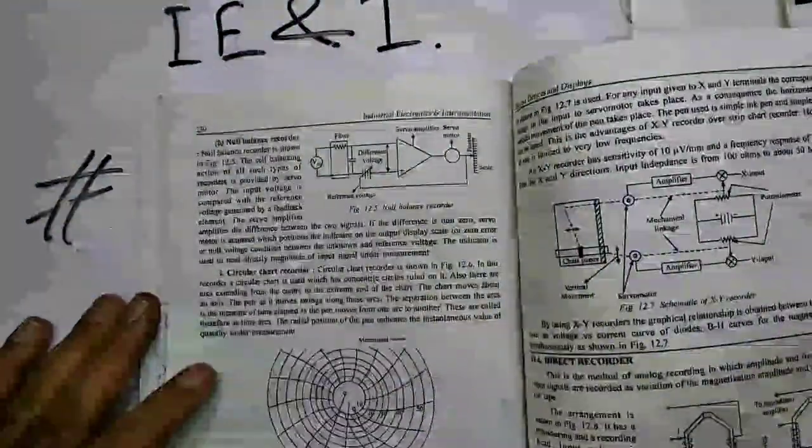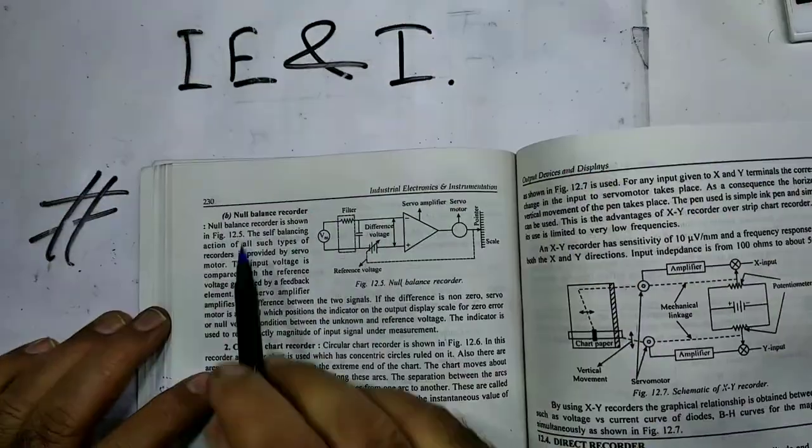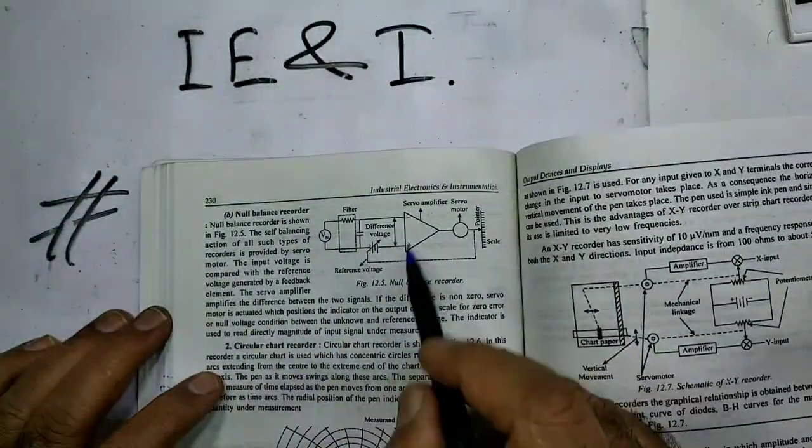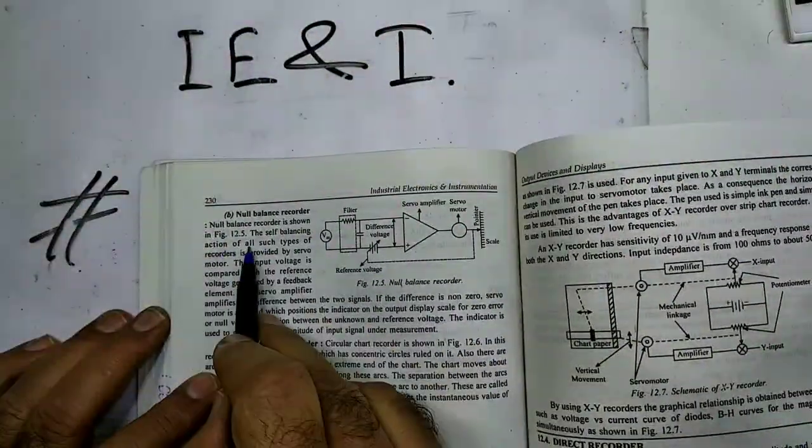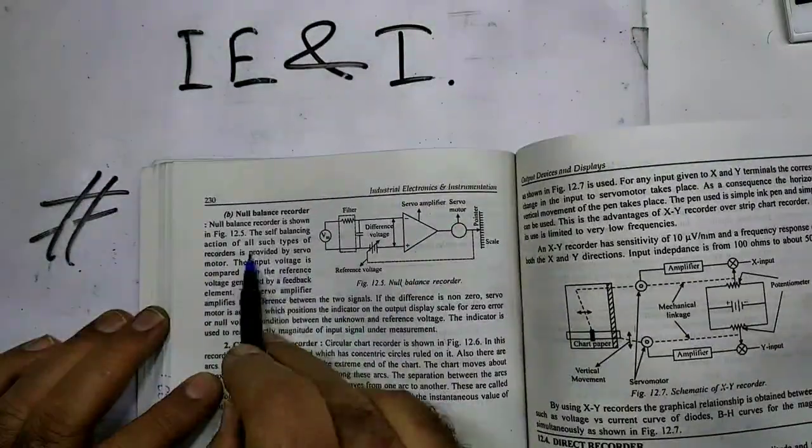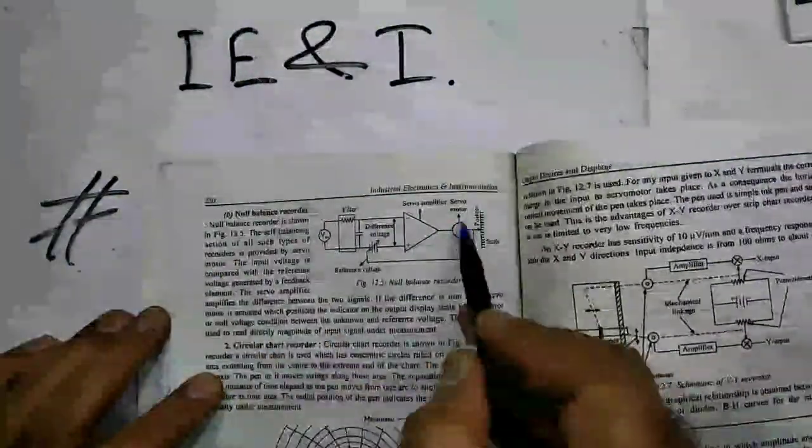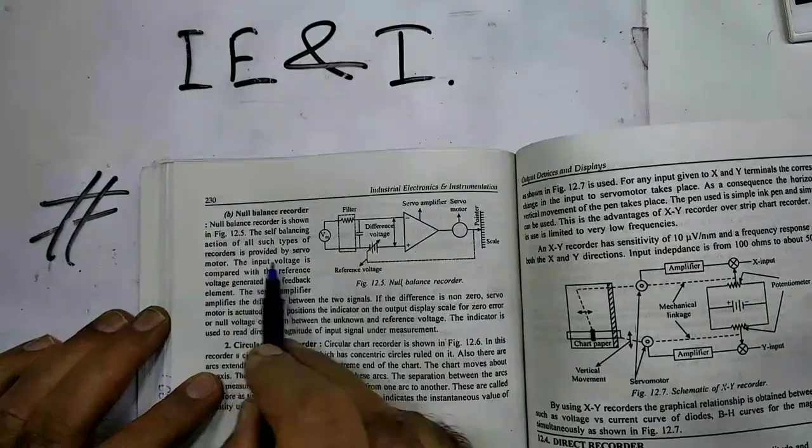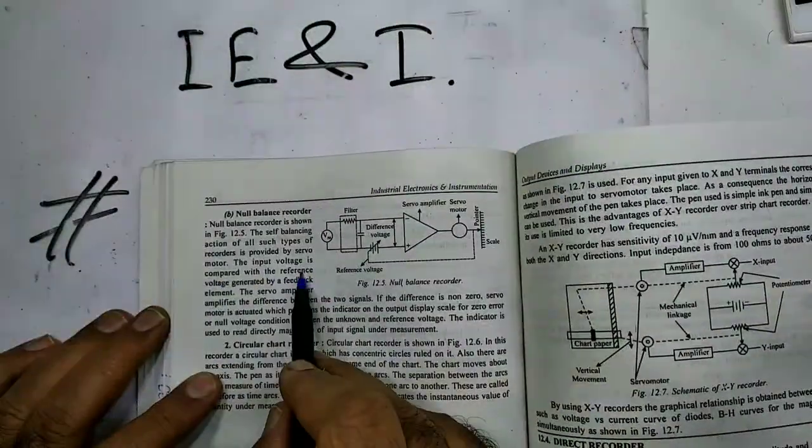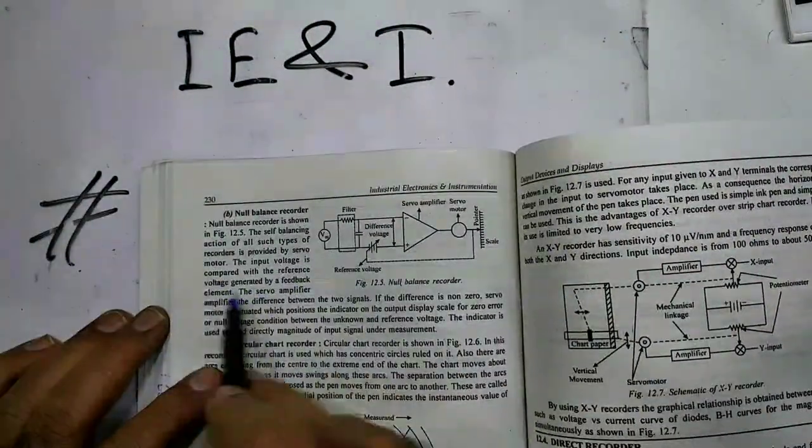Next is null balance type recorder. Null balance recorder is shown in the figure. The self-balancing action of all such type of recorders is provided by servo motor. This is the servo motor. The input voltage is compared with the reference voltage generated by feedback element. The servo amplifier amplifies the difference between the two signals.